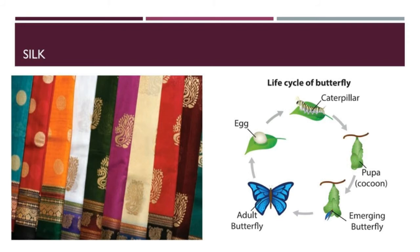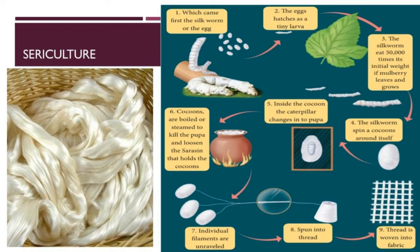Silk: Have you ever attended marriage functions? What type of dress does the bride and bridegroom wear? What is it made of? Silk is a secretion of the silk moth. Silk is obtained from the cocoon of silkworms which feed on mulberry leaves. Silkworms live for a very short time - only about two months. During this period they pass through four stages of development: egg, caterpillar, cocoon, and adult moth. These stages are called the life cycle of a silk moth.